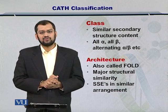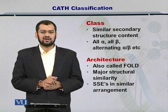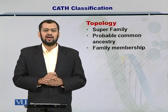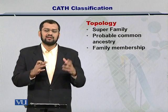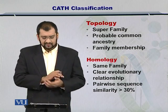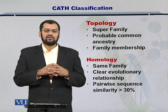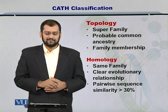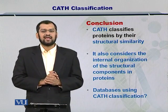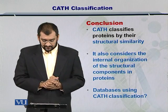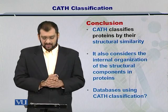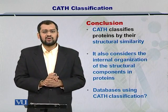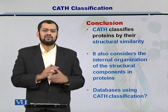Architectures are also called folds, which are very important when studying protein structures and their evolution. Topology relates to the super family, and if two proteins share the same topology, they most likely have the same origin. Homology means the proteins are similar in at least certain functions, requiring sequence alignment of over 30%. In conclusion, CATH — Class, Architecture, Topology, and Homology — classifies proteins by their structural similarity, considering the internal organization of secondary structures. This enables the creation of databases of protein structures based on such classification.